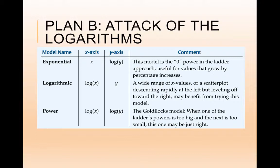A wide range of x values or a scatter plot that descends rapidly may benefit from this. And then when pretty much nothing else works, try the log of both. They call this the Goldilocks model because it means that you tried something on the ladder and it was too big. So you went to the next one and that was too small. So this one may just be right. But sometimes if all else fails, try the log of both.